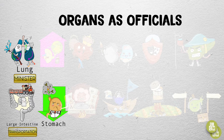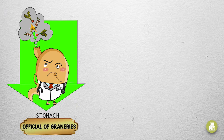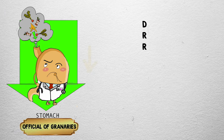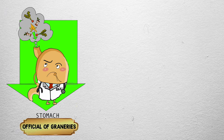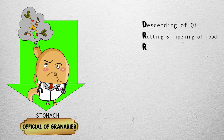This brings us to our next organ, the stomach. The stomach and spleen are unique in that they share the same office — both are considered the official of the granaries. Meet Dr. R — a stomach. We named our stomach Dr. R, like the sound of a stomach digesting a good meal, because the stomach is in charge of the rotting and ripening of food.